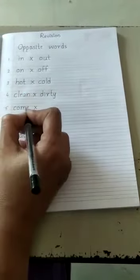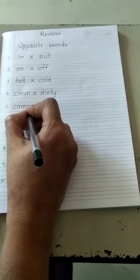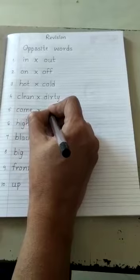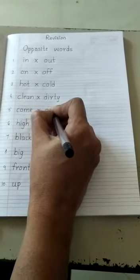Fifth one is C O M E. Come. Opposite word for this word is Go. G O. Go.